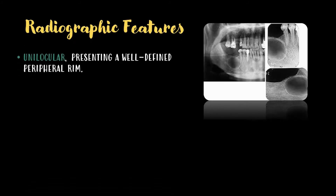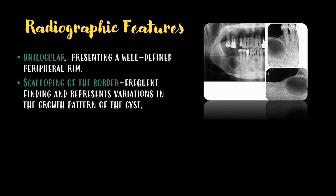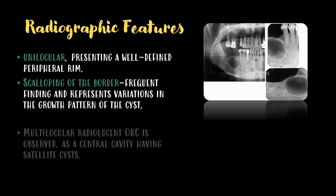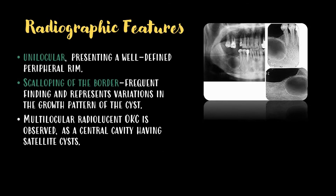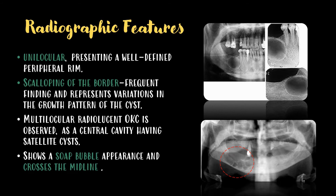Radiographically, OKC presents as a unilocular radiolucency with a well-defined peripheral rim. Scalloping of the border is a frequent finding and represents variations in the growth pattern of the cyst. Multilocular radiolucent OKC is observed as a central cavity having satellite cysts, representing a soap bubble appearance, and it crosses the midline.